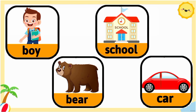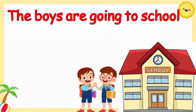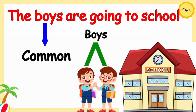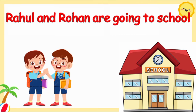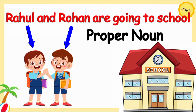Now let's understand this better with the help of one example. 'The boys are going to school.' Here, the word 'boy' refers to both the boys and is common to them, so the word 'boys' is a common noun. But if we say 'Rahul and Rohan are going to school,' then we are talking about each of the particular boys. Rahul and Rohan are unique names used to identify them, so the names Rahul and Rohan are both proper nouns, and have also begun with a capital letter.